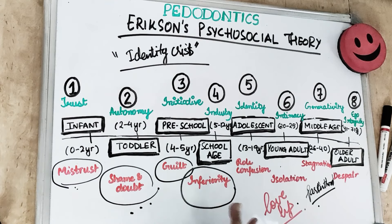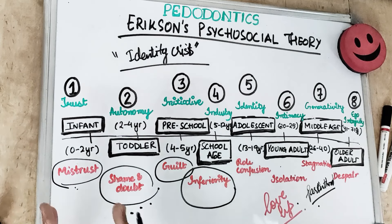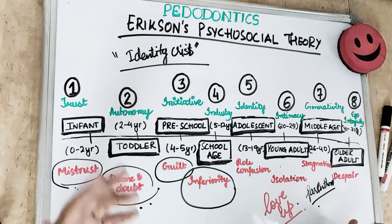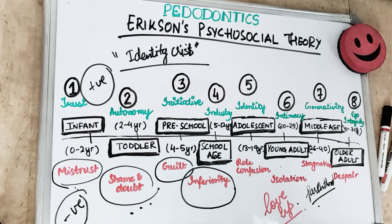Erikson's theory is simple, comprehensive, and easy to understand. It is based on an age-wise classification of individuals and can be applied at each stage of life and development. However, it comes with certain demerits — it is based on extreme ends of personality, either positive or negative, so it addresses only extreme behaviors. That concludes Erikson's psychosocial theory. If you have any questions, leave them in the comments below. Give it a thumbs up if you liked the video, and make sure you subscribe to the channel if you haven't yet.